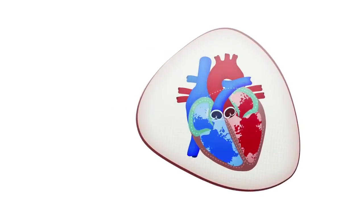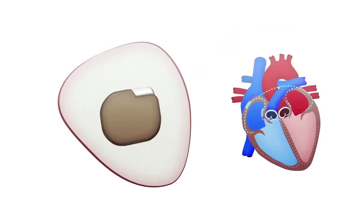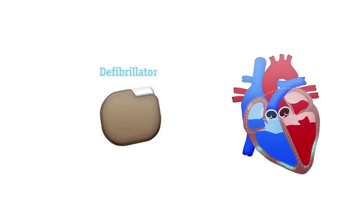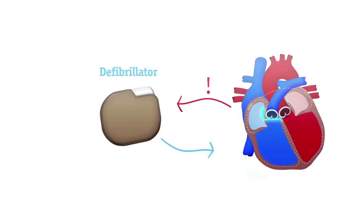People at risk of a sudden cardiac arrest can be protected with a small implantable device called a defibrillator. It automatically detects an irregular heart rhythm and produces an electric shock to return the heart to its normal rhythm.